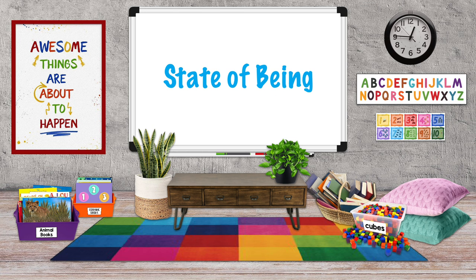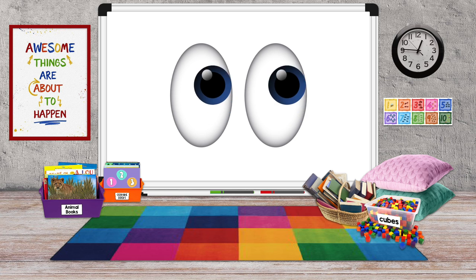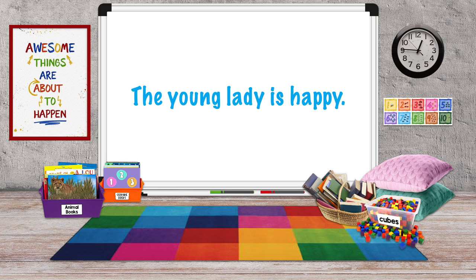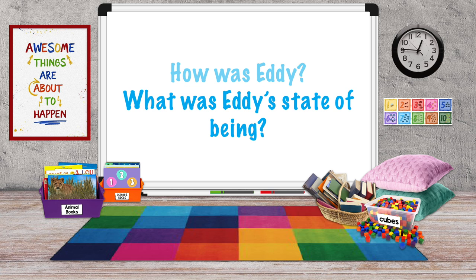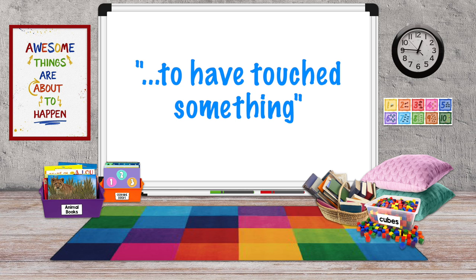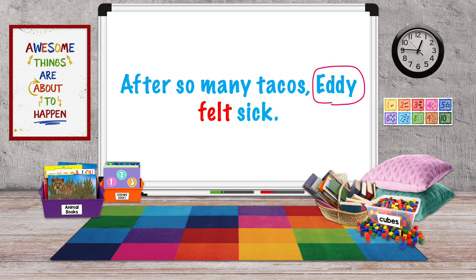Verbs can also show state of being. A state of being is how something is. For example, look at these sentences: The young lady is happy. After so many tacos, Eddie felt sick. In the first sentence, 'is' helps to tell us something about the young lady — it's not an action. It connects a word that describes the young lady's state of being, or how she is, to the main subject, lady. In the second sentence, we can ask: how was Eddie? He felt sick. We know that 'felt' isn't an action verb here — in this case, 'felt' is a state of being verb. It connects the main subject, Eddie, to a word that says something about how he was: sick.